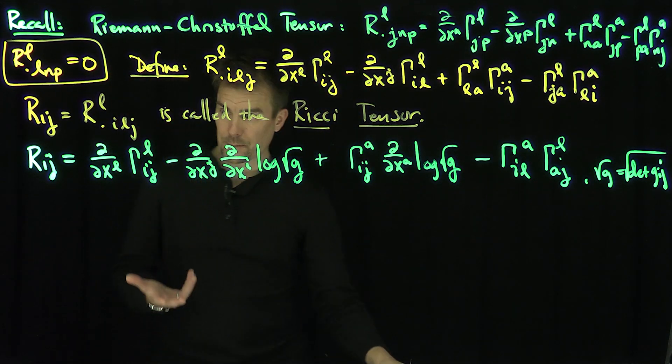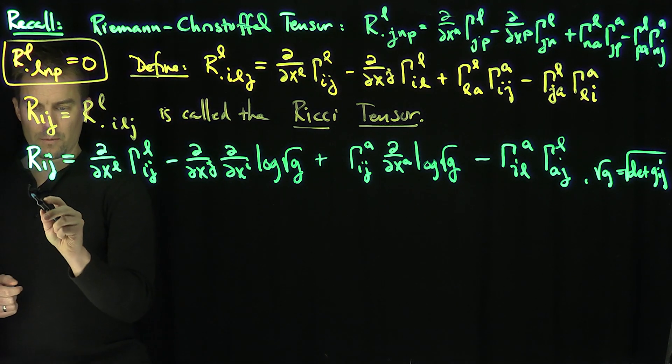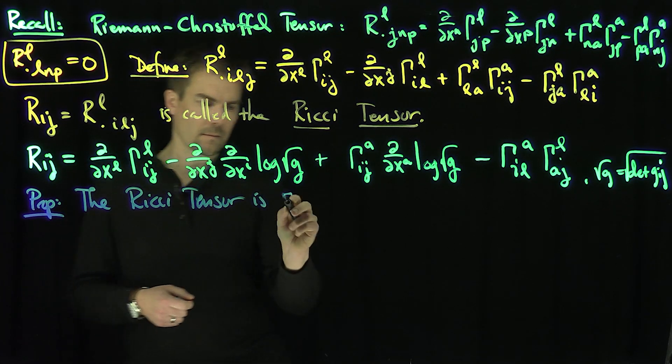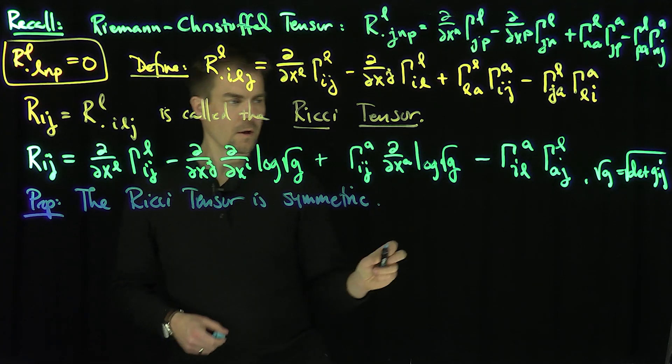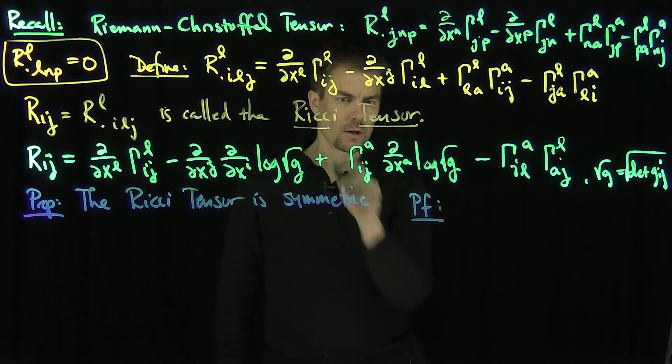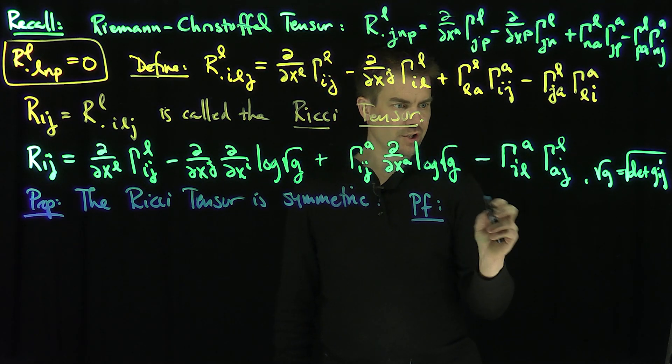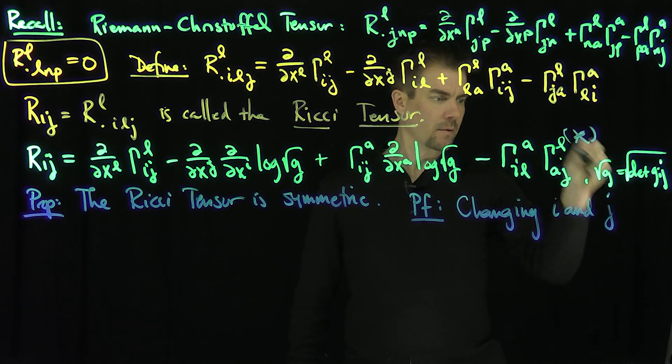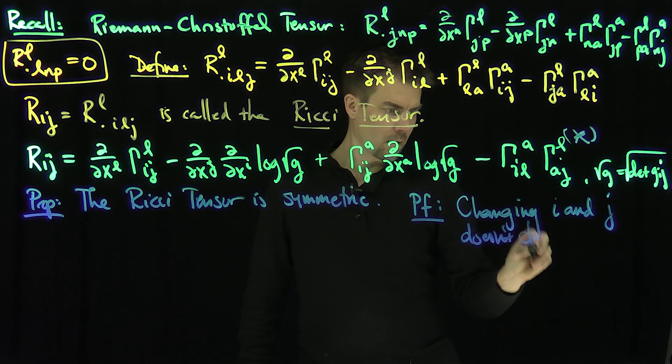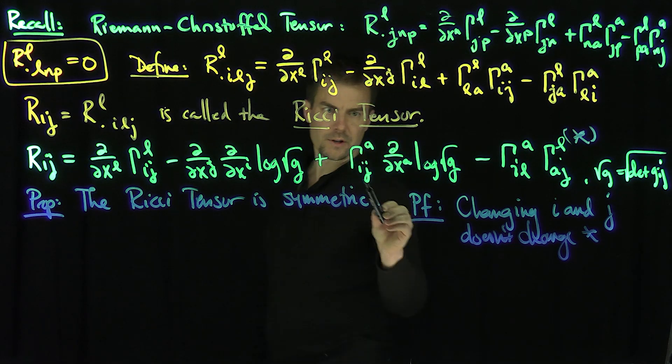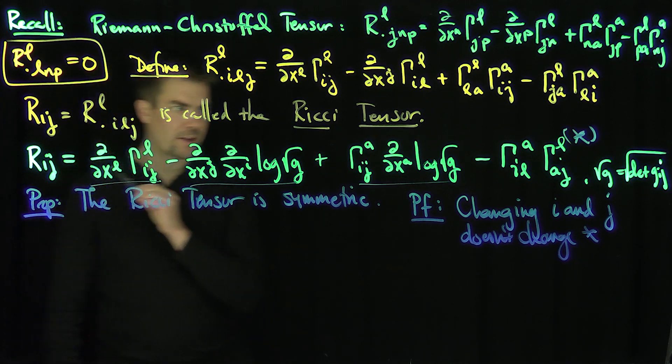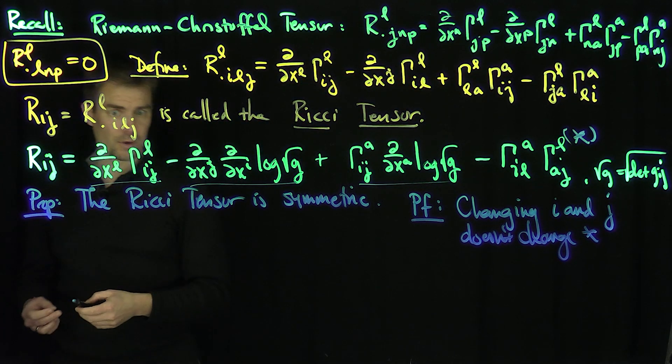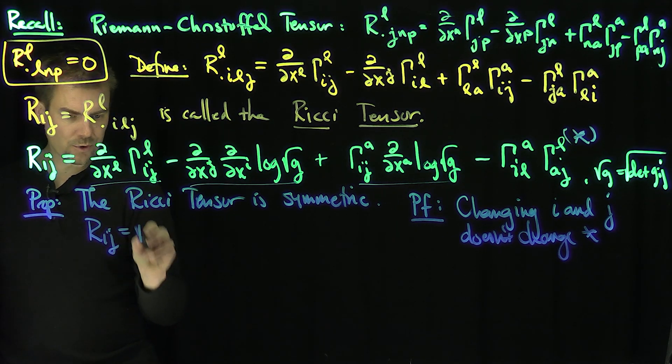Note some more basic properties. Proposition: The Ricci tensor is symmetric. Proof: If we change I and J in the above equation, changing I and J doesn't change this expression. It doesn't change the second derivative. It doesn't change that by the symmetry of the Christoffel symbols, and it doesn't change this on changing all the A's to L and all the L's to A, because those are just dummy indices. Beautiful. So it's a symmetric tensor. In other words, R_IJ equals R_JI.